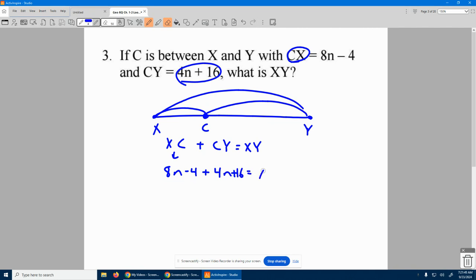And that equals XY, and it's asking what is XY? So we just put it together. That's 12N, lose 4, gain 16, you've gained 12. That's what XY is worth. It's just an expression. So the answer here is 12N plus 12.